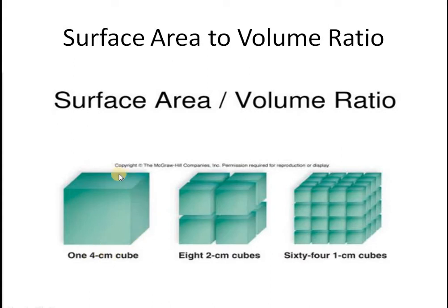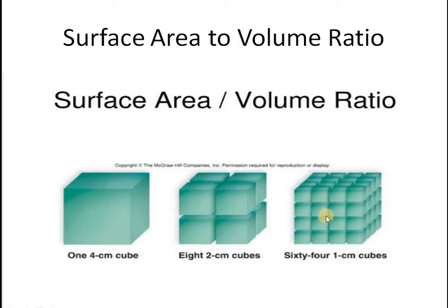If you see this cube of 4 cm on each side, I have decreased its size into 8 cubes of 2 cm each. By decreasing the size of the cube, the surface area to volume ratio has increased. Then I changed these 8 cubes into 64 cubes, each of 1 cm on each side. Again, the size decreased but the surface area to volume ratio increased. So as you decrease the size of the cube, the surface area to volume ratio increases.